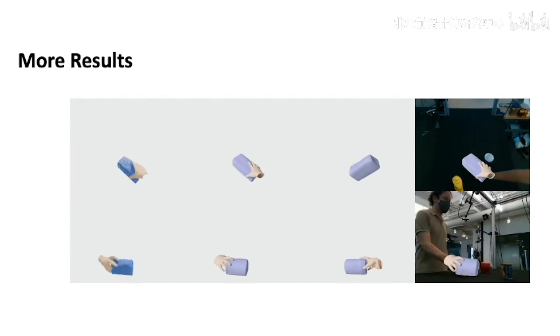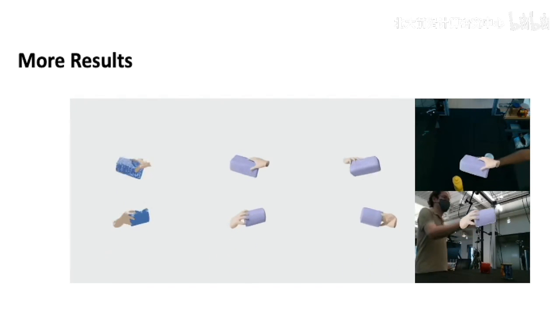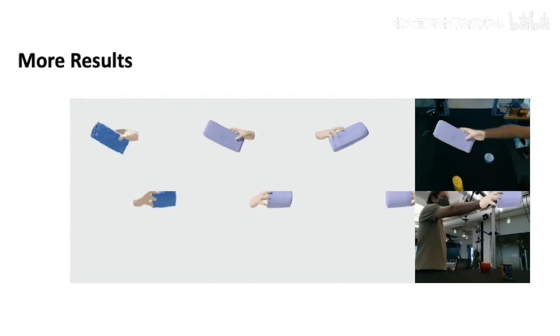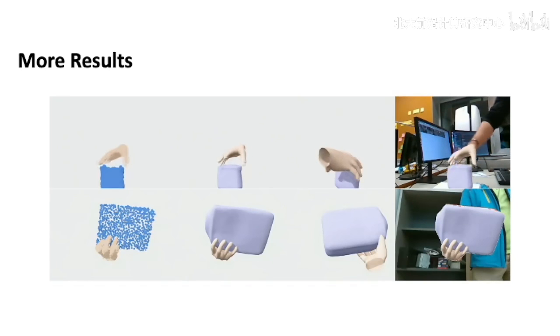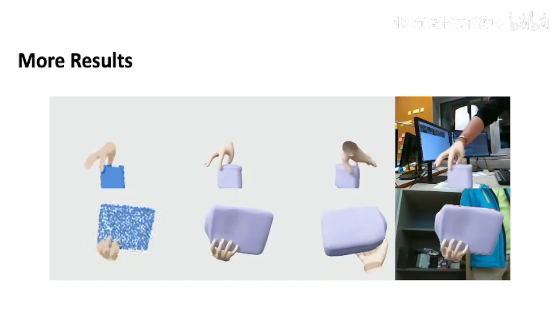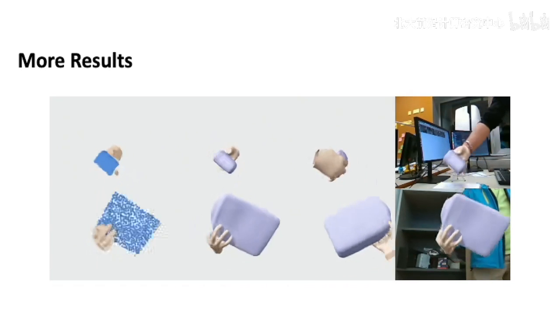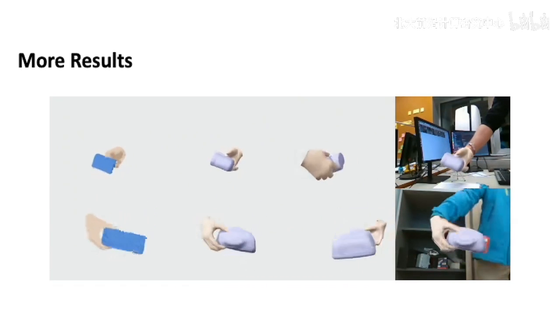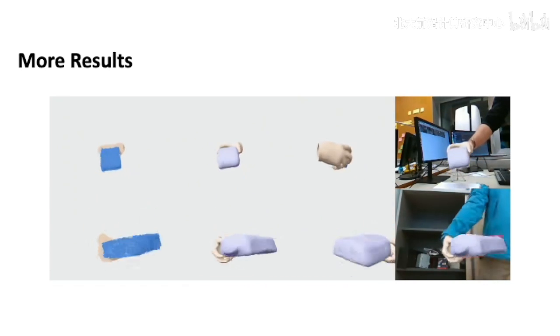Our method can handle object instances from unseen categories — for example, a box. Even under heavy hand-object inter-occlusion, our method can handle well.